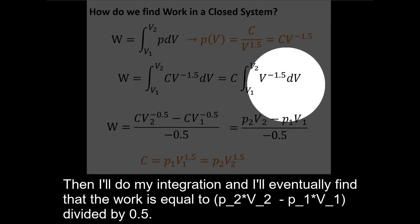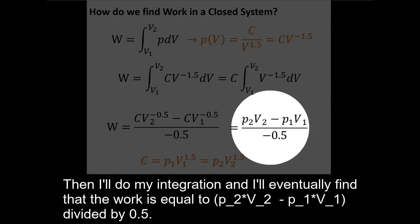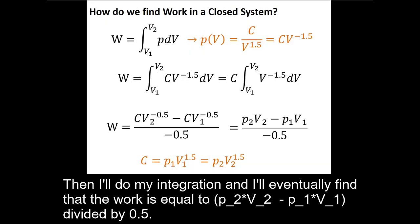Then I'll do my integration and I'll eventually find that the work is equal to P₂V₂ minus P₁V₁ divided by 0.5.